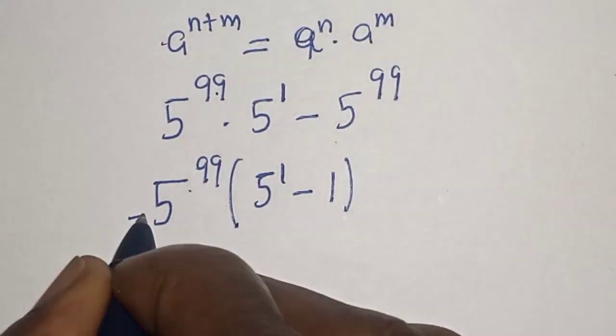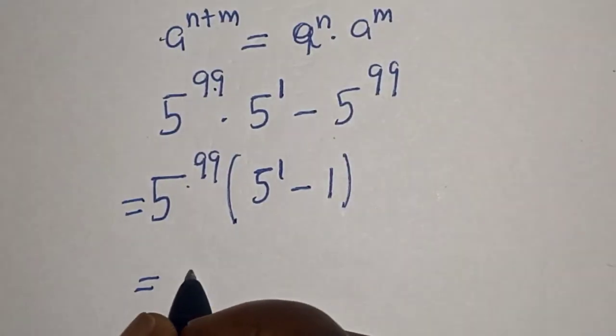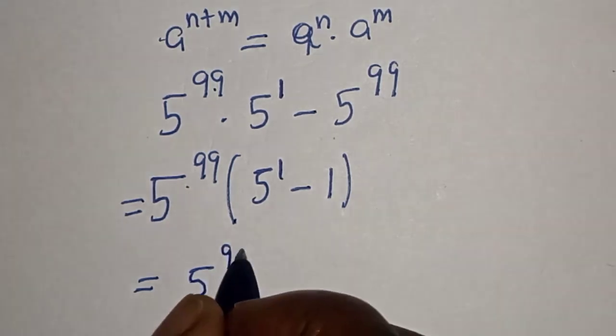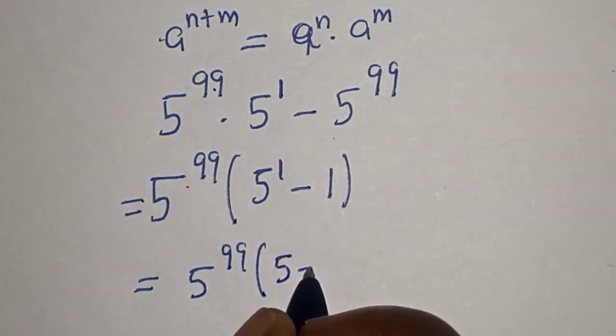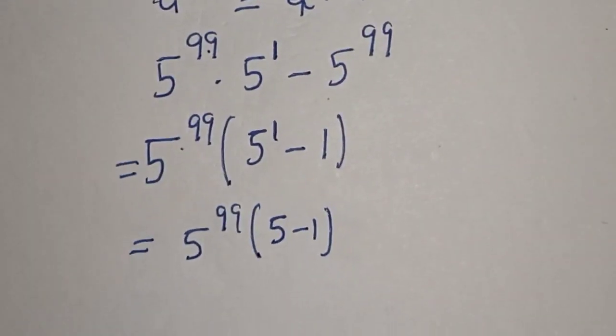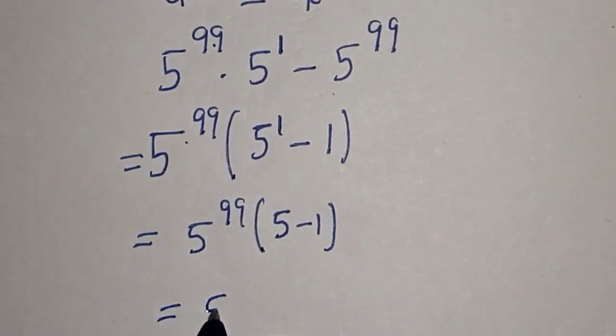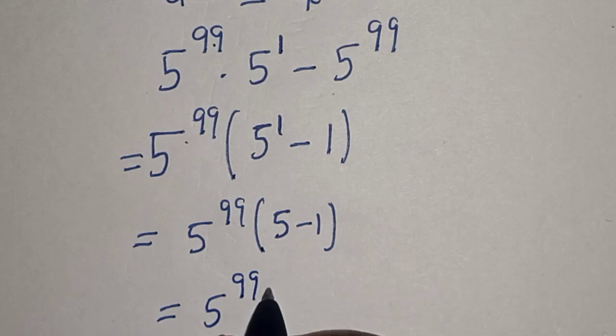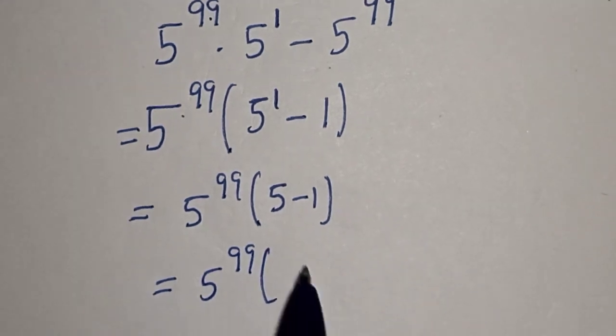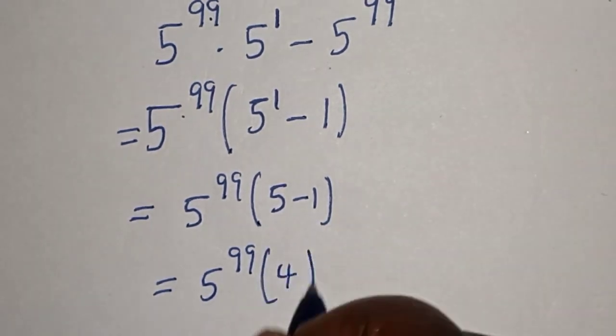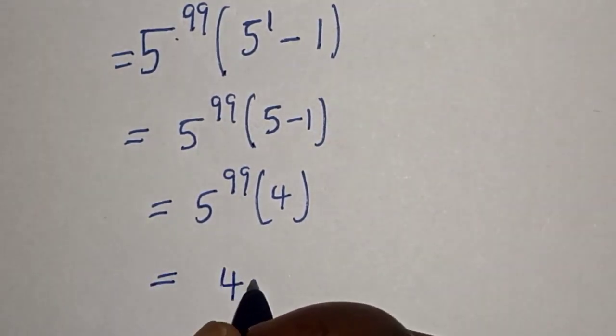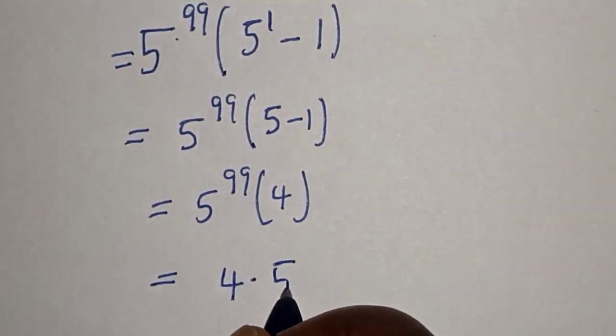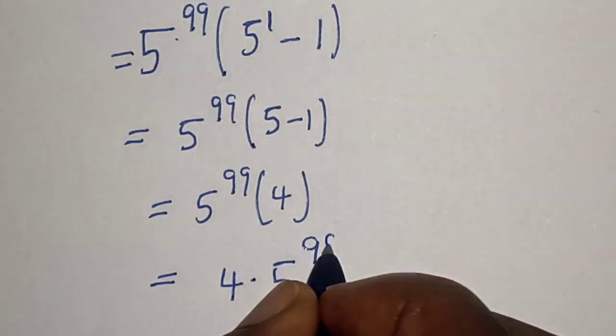Then this is equal to 5 raised to power 99 multiplied by 5 raised to power 1 is same thing as 5 minus 1. Then this is equal to 5 raised to power 99 multiplied by 5 minus 1, and that is 4. And our final answer is 4 multiplied by 5 raised to power 99.